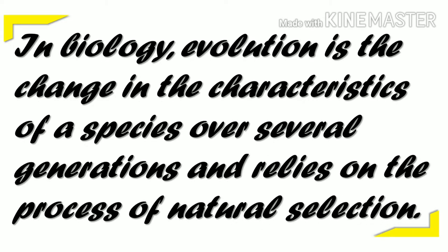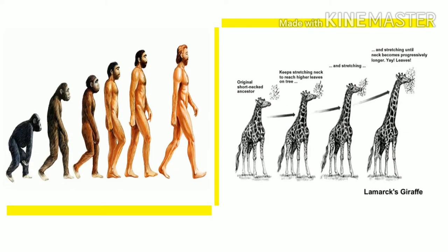Evolution. Let us first see the definition of evolution. In biology, evolution is the change in the characteristics of a species over several generations and relies on the process of natural selection. This can be well explained by the theory forwarded by naturalist and biologist Charles Darwin and Lamarck. Both of them placed before the world an interesting theory of evolution, proving that most animals adjusted themselves by adapting features to suit their habitat. Even man also evolved to fit in this environment.